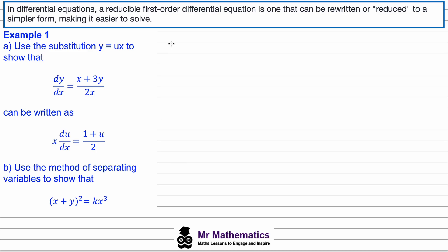If we say that y is equal to ux, then we can find dy/dx by differentiating ux using the product rule. We differentiate x to get 1, giving a u term, and then differentiating u with respect to x using implicit differentiation gives us du/dx.